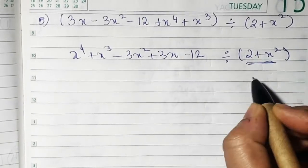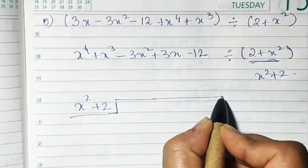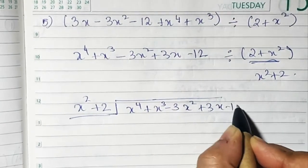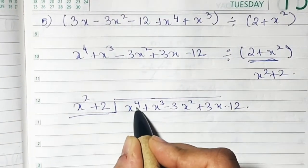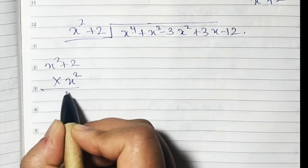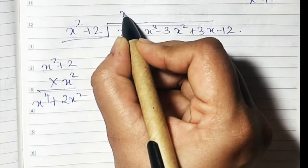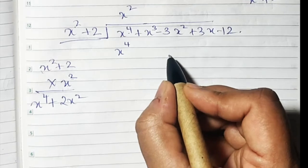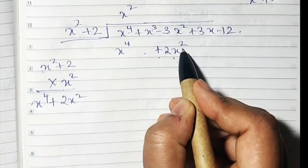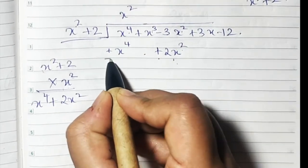Once it's in order we can divide. The divisor is x² + 2. We set it up: x² + 2 outside, and x⁴ + x³ - 3x² + 3x - 12 inside. The first term is x² and we have x⁴, so 2 x's are missing. Multiply x² + 2 by x²: x² × x² = x⁴, and 2 × x² = 2x². Write x² in the quotient, placing 2x² under the x² column, not under x³.